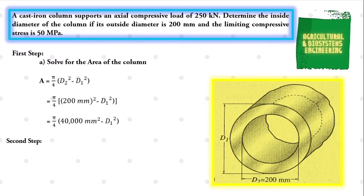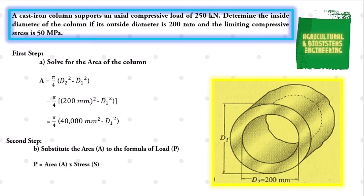After solving the area, the second step is to substitute it into the formula for load. The formula is P equals area times stress. Substituting, the load of 250 kN is equal to pi over 4, multiplied by 40,000 square millimeters minus D1 squared, times the stress of 50 MPa.